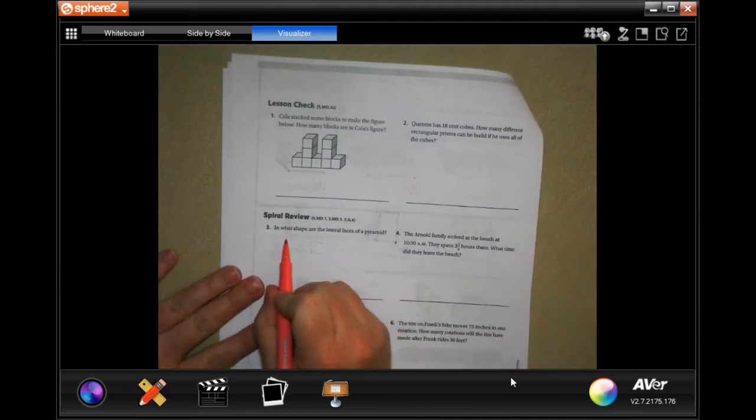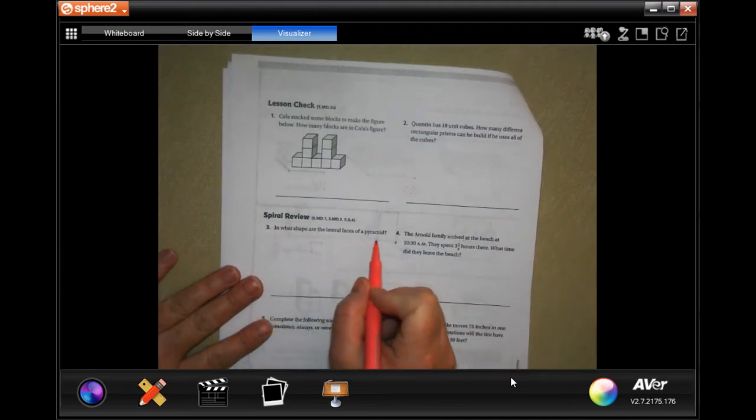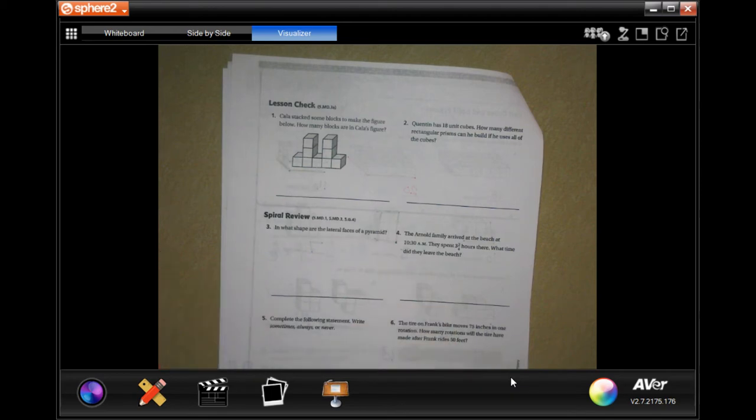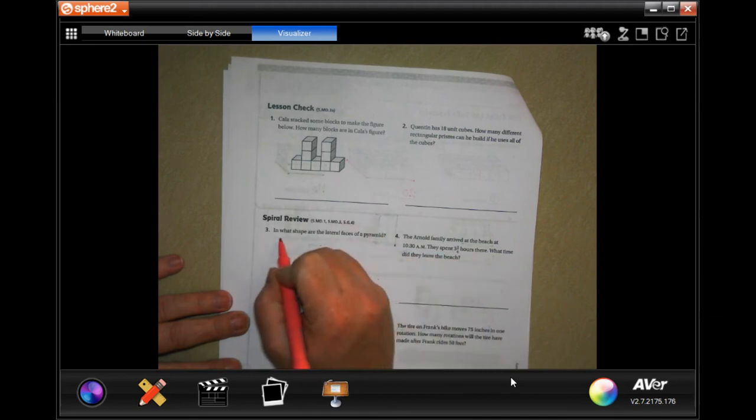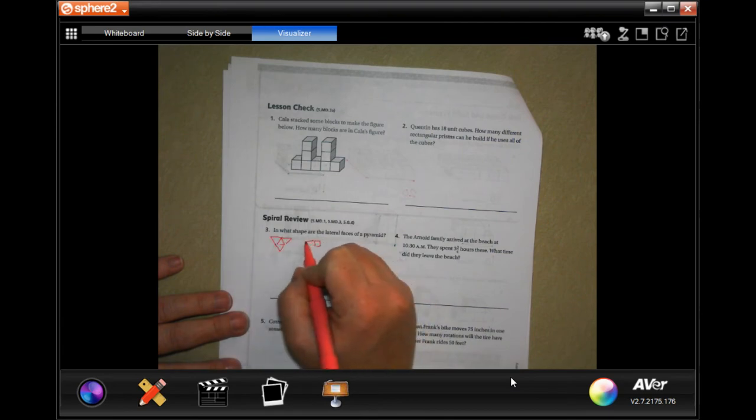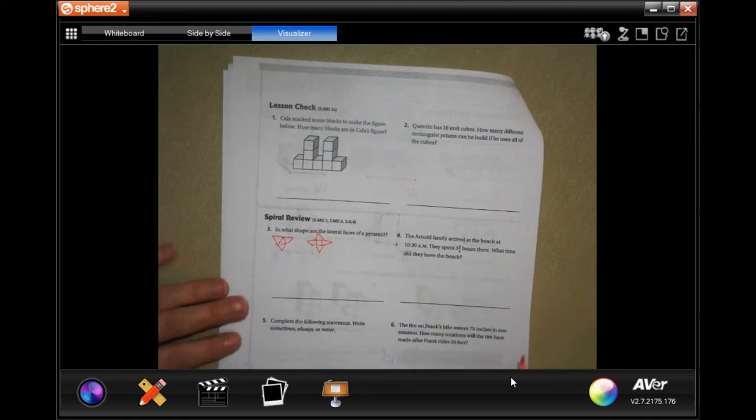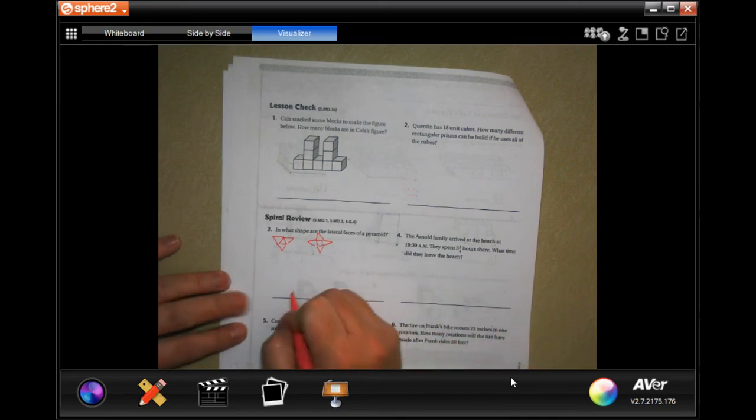It says, in what shape are the lateral faces of pyramids? So, the lateral faces, those are the faces that go up. It doesn't matter whether the base is a triangle or the base is a square. Obviously I'm not an artist, but all of the faces that fold up, the ones that are lateral, are going to be triangles.